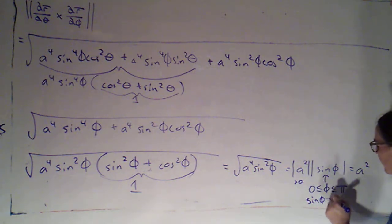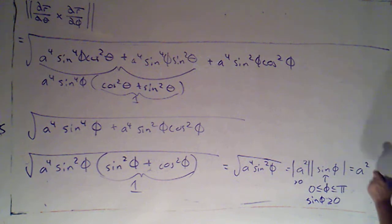will be bigger than or equal to zero over that interval. So I can simplify that to a squared sine phi.